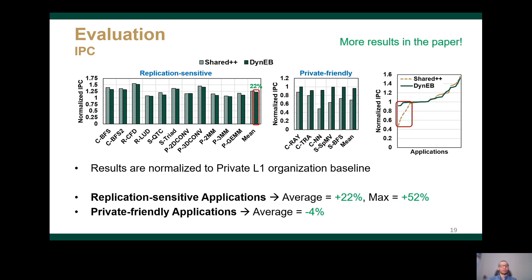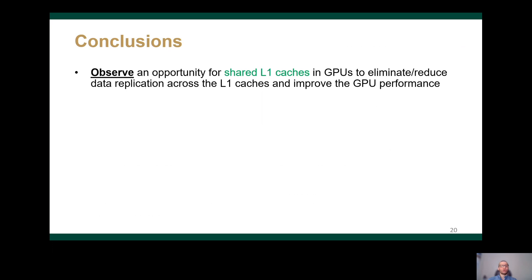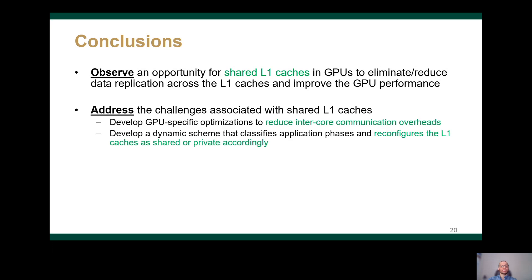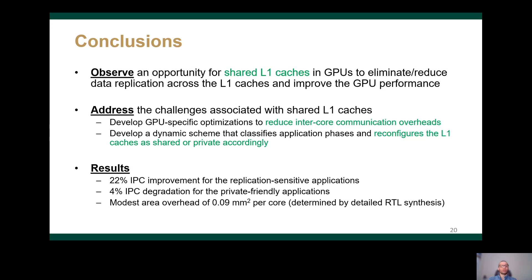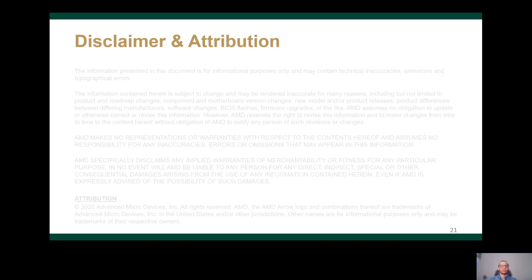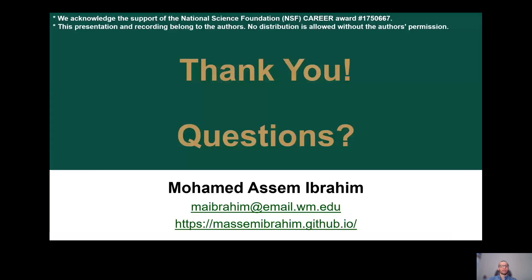More results and case studies can be found in the paper. To conclude, we observed an opportunity to employ shared L1 caches in GPUs to eliminate data replication and improve overall performance. To get the benefits of shared L1 cache design, we developed optimizations to reduce the inter-core communication overhead. We also developed a dynamic scheme that classifies application phases and uses either shared or private L1 cache design accordingly. Our dynamic scheme improves overall performance by 22% on average for replication-sensitive applications and incurs only 4% performance loss for private-friendly applications. Thank you for attending, and I'm happy to take questions.